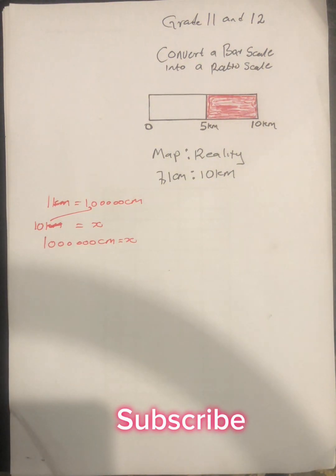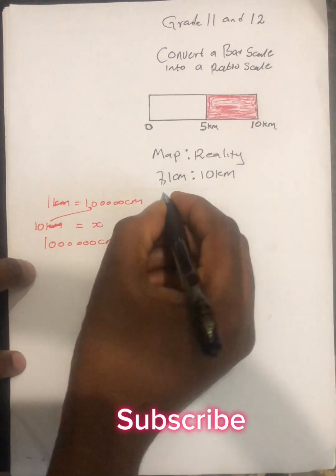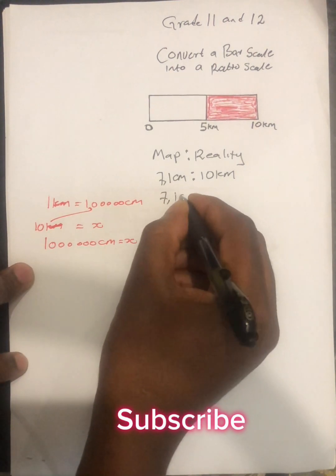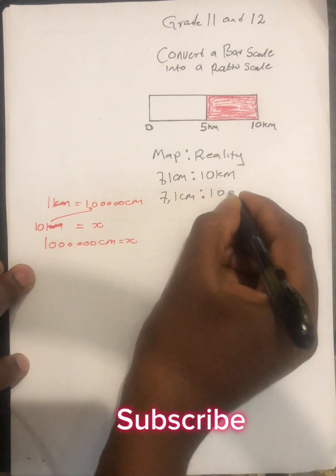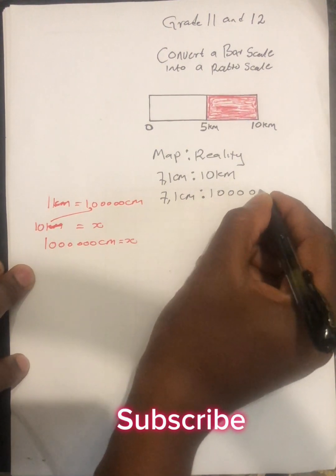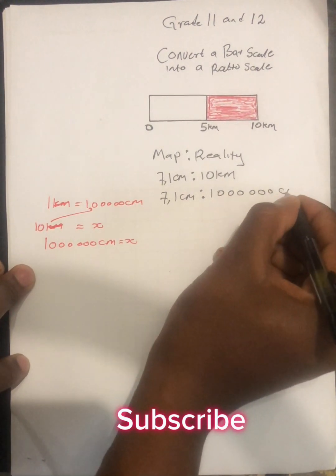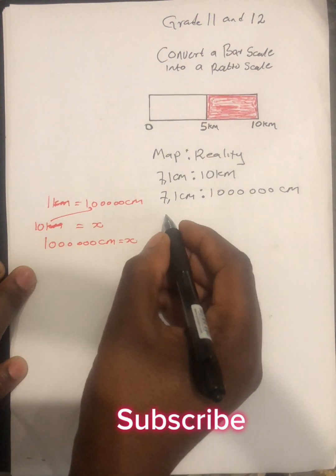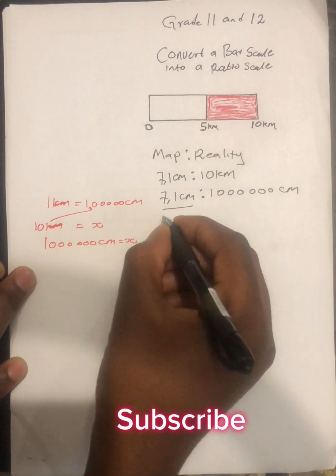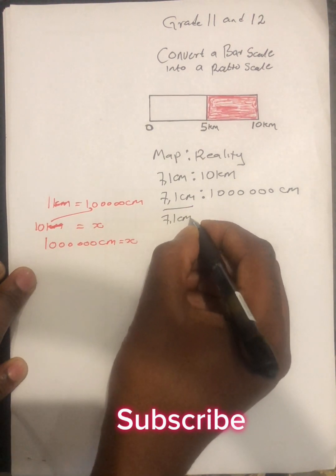So we have converted kilometers into centimeters. We know that 7.1 centimeters is to what? Is to 1,000,000 centimeters. Now the next step is to divide both sides by the smallest number between the two sides. Obviously, the lowest number here is 7.1.